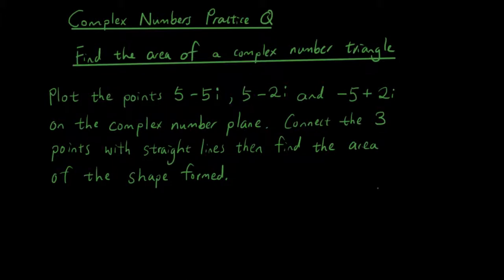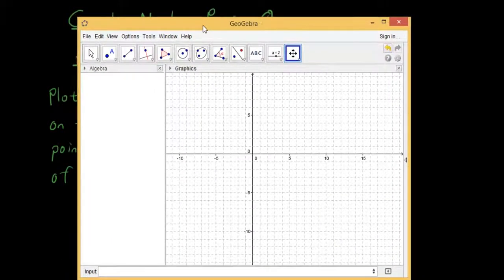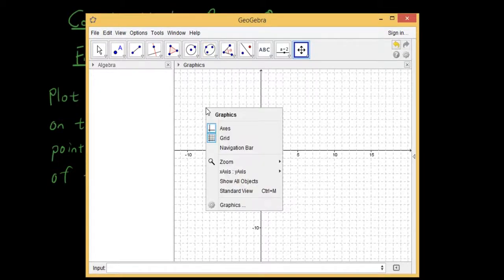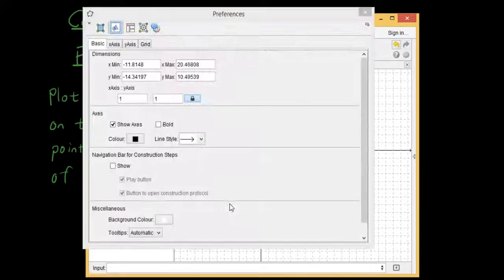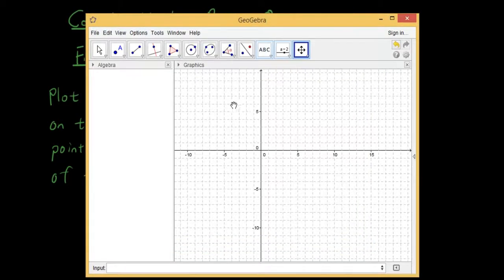So the best way to do that I guess is GeoGebra. Open up GeoGebra and if you're wondering how I got the grid lines, basically you just right click on the background and choose graphics, go into grid, and you can set the grid lines over here. So just put those options in.